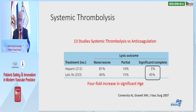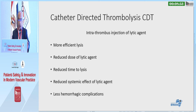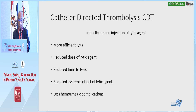Systemic thrombolysis was therefore abandoned in favor of catheter-directed thrombolysis. During catheter-directed thrombolysis, the thrombolytic agent is injected inside the thrombus using a catheter positioned within it. This came with the premise of more efficient lysis, reduction of the dose and time of thrombolytic therapy, reduction of systemic effects, and therefore reduction of hemorrhagic complications.